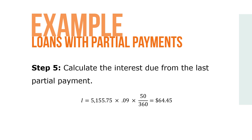Once all partial payments have been calculated, we find the maturity value of the loan by calculating the interest due from the last partial payment to the maturity date and adding it to the last adjusted principal. Note: the last partial payment was made on day 70 of the loan. Therefore, 50 days remain on the loan — 120 minus 70 equals 50 days.